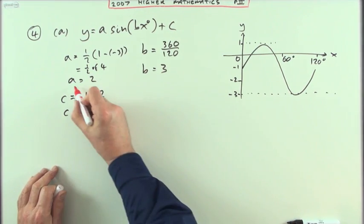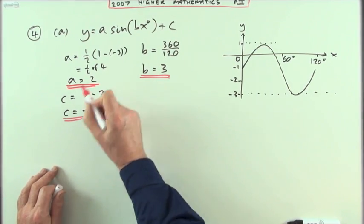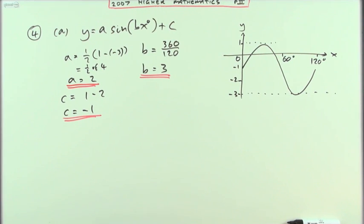Well, there was the 3 marks, you didn't need to put any of that down, of course. You just needed to make the statements: A is 2, B is 3, and C is negative 1.